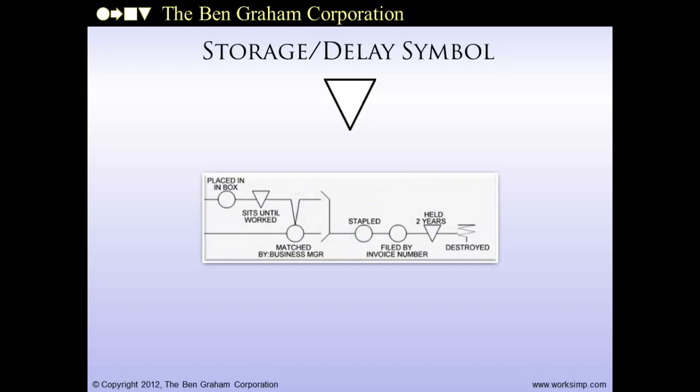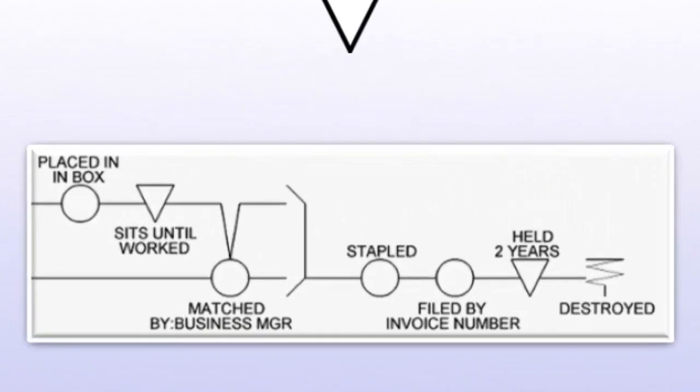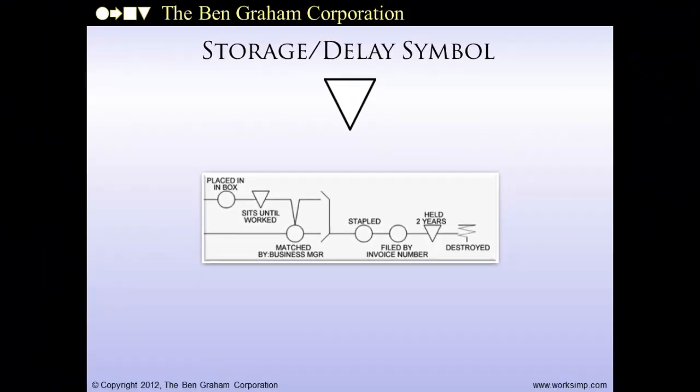Delay and storage steps are shown with a triangle. This symbol represents time when nothing is happening to the work. How small a period of time we choose is a matter of judgment — we should show delays that consume significant amounts of time. Words associated with this symbol describe duration of non-activity, such as 2 hours or 25 minutes, or the condition that will end it, such as until 8 AM the next day or until receipt of the purchase order. In this snippet, you see a delay of unspecified time — until worked — and a storage of 2 years. In most processes, delays account for most of the processing time and are an obvious opportunity for improvement.